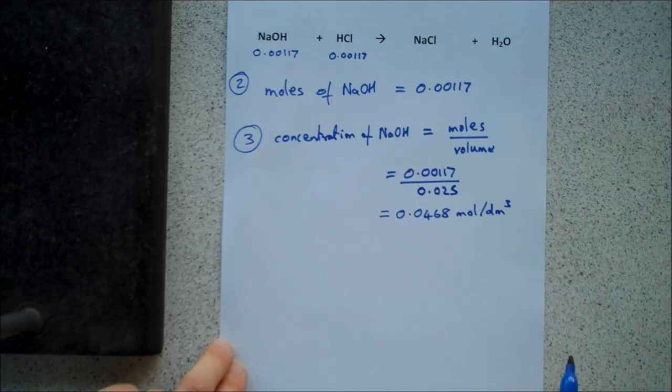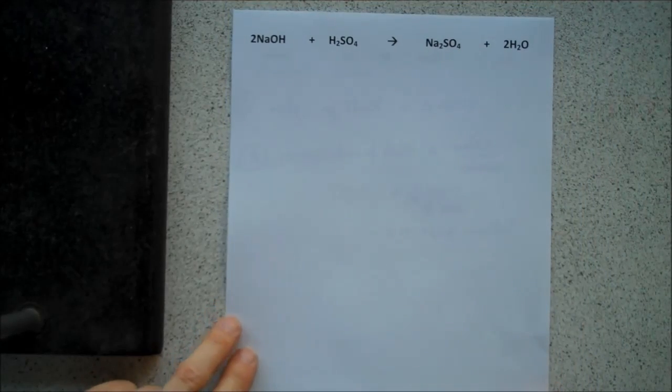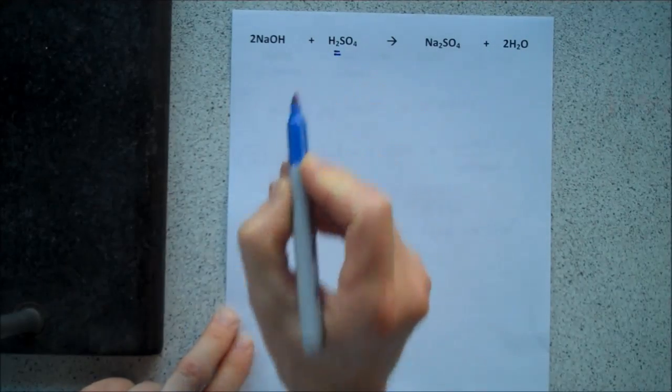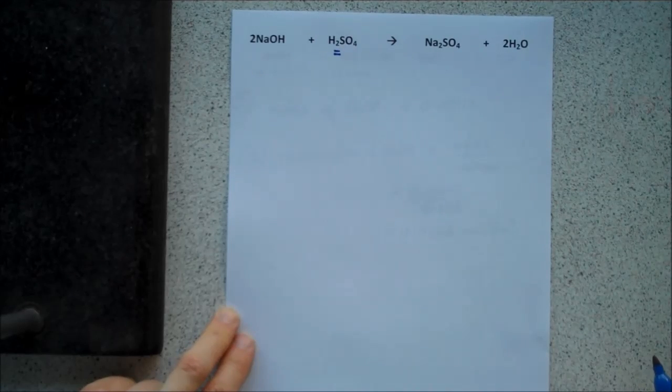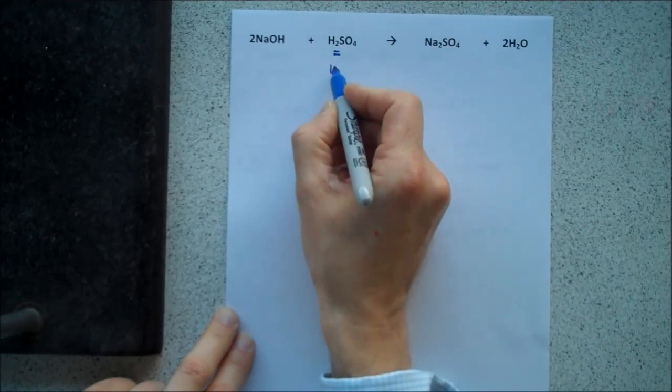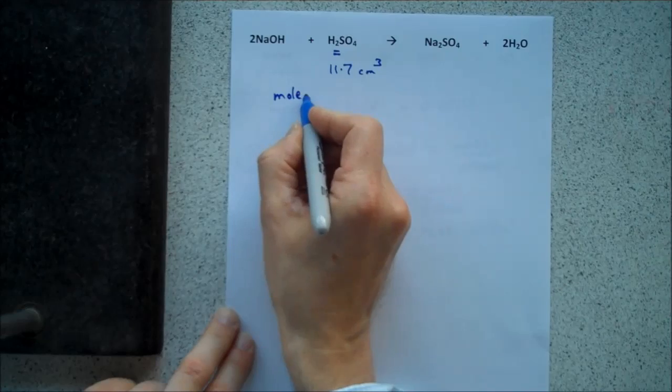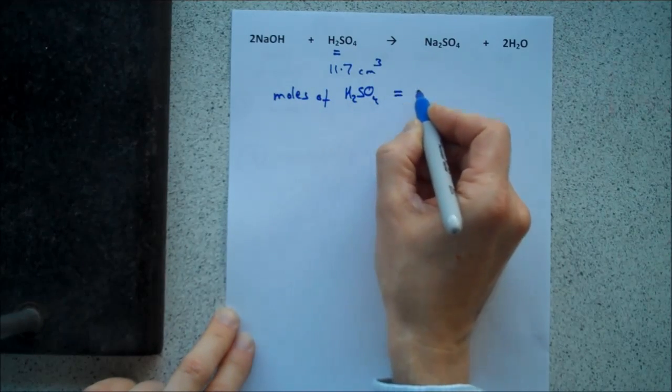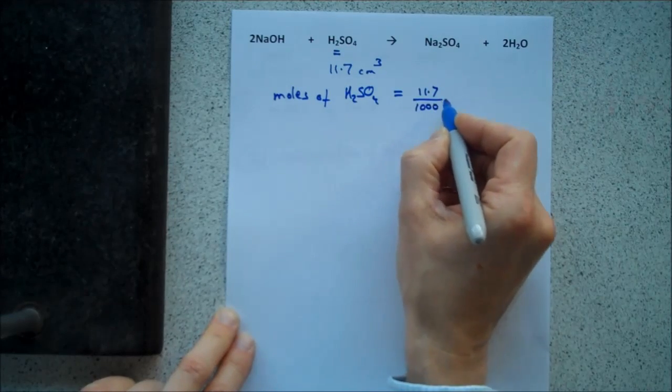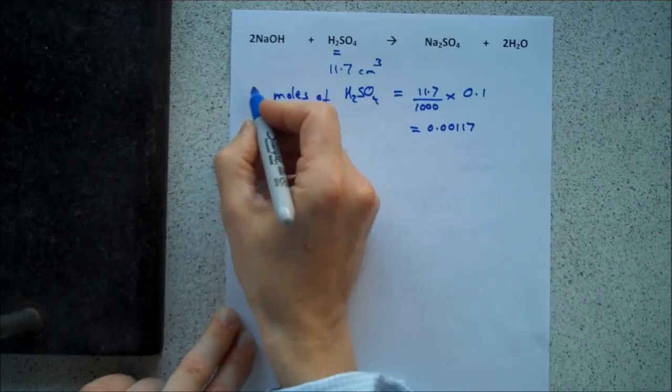Now, all titration calculations follow this pattern, but there is a slight change. If, for example, you have a different acid, imagine you're using sulfuric acid. Now, sulfuric acid is H2SO4. So imagine we've done exactly the same experiment as before, but our sulfuric acid was what was in the burette rather than the hydrochloric. So if we got our titration value of 11.7 centimetres cubed again, and our concentration was 0.1, the moles of H2SO4 would be the same. It would still be 11.7 over 1,000 times 0.1, which is 0.00117 moles. So that step one would be exactly the same as before.